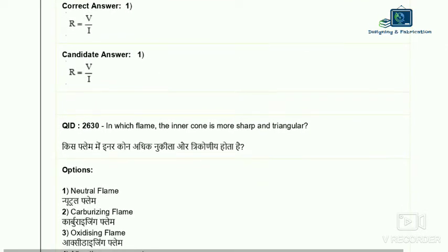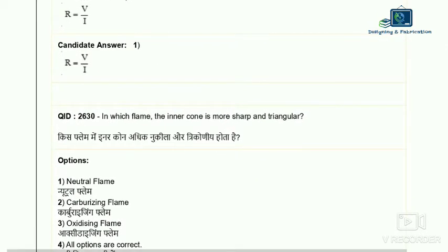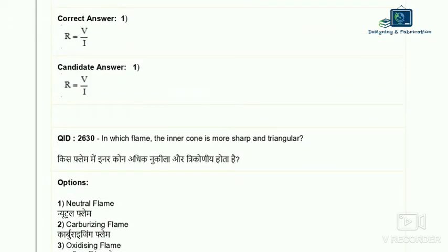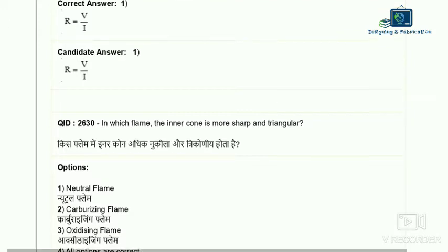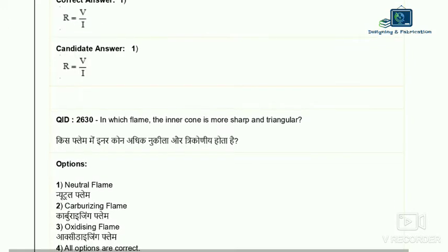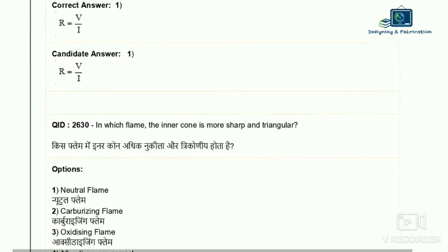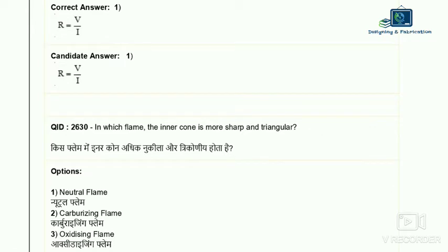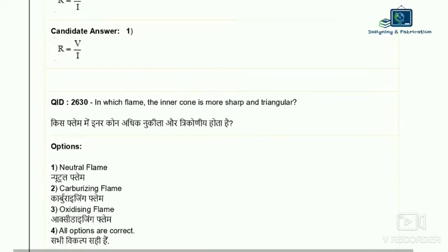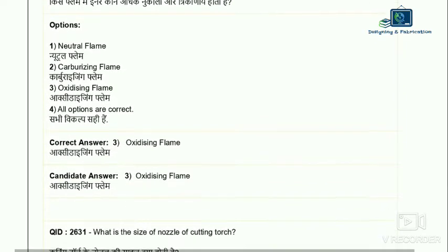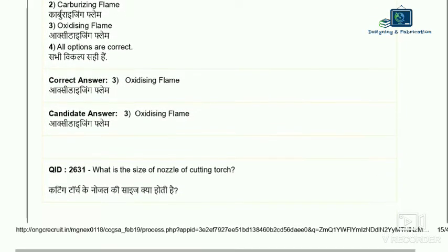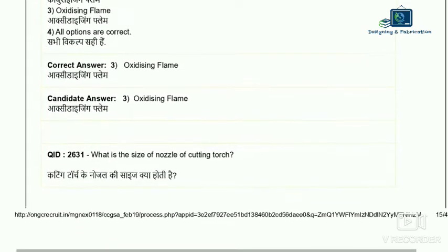Question 30: in which flame is the inner cone more sharp and triangular? Options include oxidizing flame, neutral flame, and carburizing flame. The oxidizing flame has a triangular, sharp inner cone that is clearly visible. So the correct answer is oxidizing flame — option three.